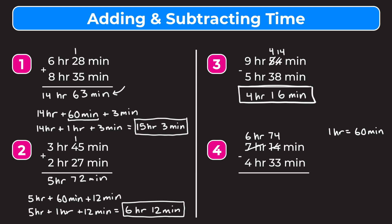Now 74 is greater than 33, so we can subtract: 4 minus 3 is 1, and 7 minus 3 is 4, giving us 41 minutes. Then 6 hours minus 4 hours gives us 2 hours. Our final answer is 2 hours and 41 minutes. Remember to stack your problems like normal addition and subtraction, and remember how to borrow and carry when dealing with hours and minutes.